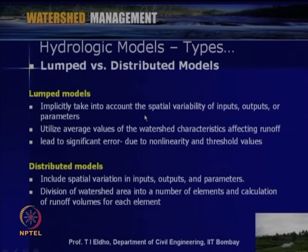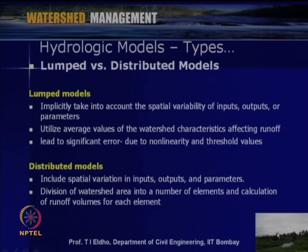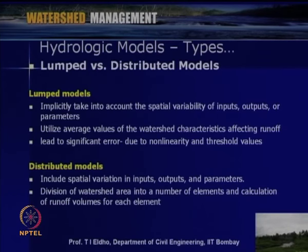Two important types of modeling concepts used in hydrologic modeling are lumped versus distributed models. Lumped models implicitly take into account the spatial variability of inputs, outputs, or parameters — we lump the system for the given watershed since we do not know the exact behavior in a distributed way, utilizing average values of watershed characteristics affecting runoff. This may lead to significant error due to non-linearity and threshold values.